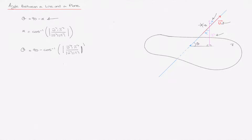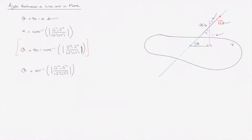That's a formula for the angle theta, which I'm boxing here. And now since alpha and theta are complementary angles, we can simplify this formula. We can say that theta is equal to arcsin of the absolute value of u dot n over the product of the magnitudes of u and n. That is the formula to find the angle between a line and a plane.